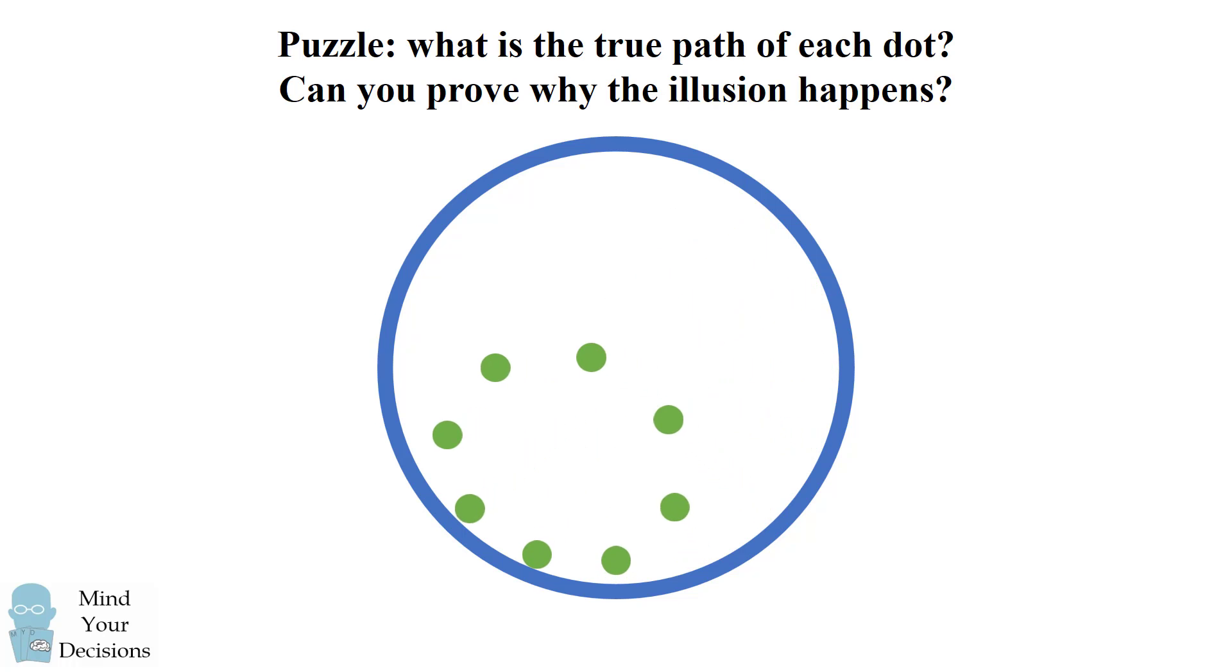There are two parts to this puzzle. First, can you figure out what the true path of each dot is? And second, can you prove why this illusion happens?